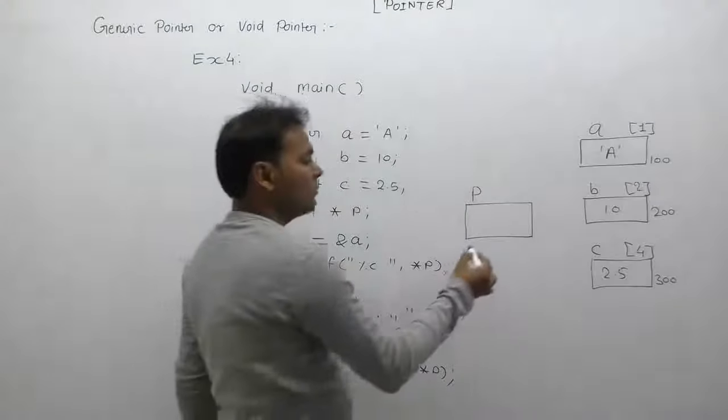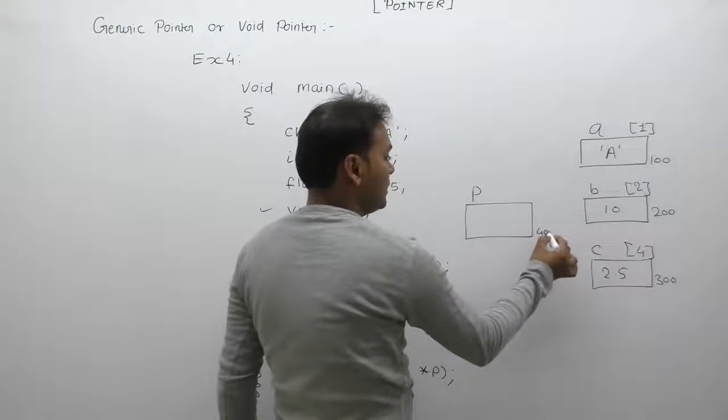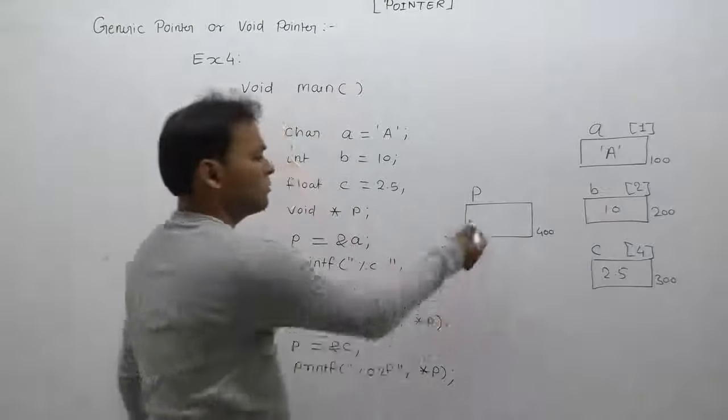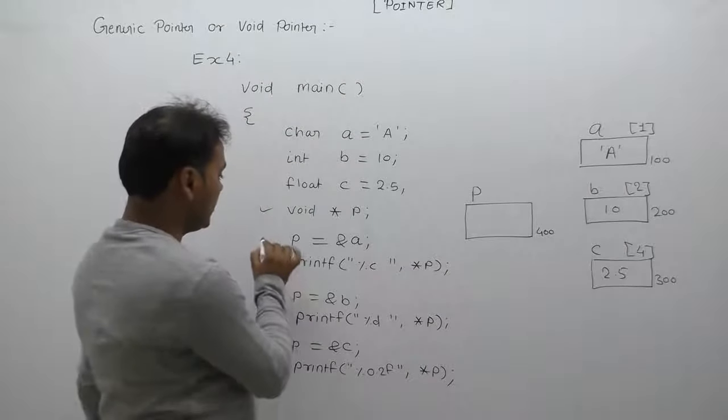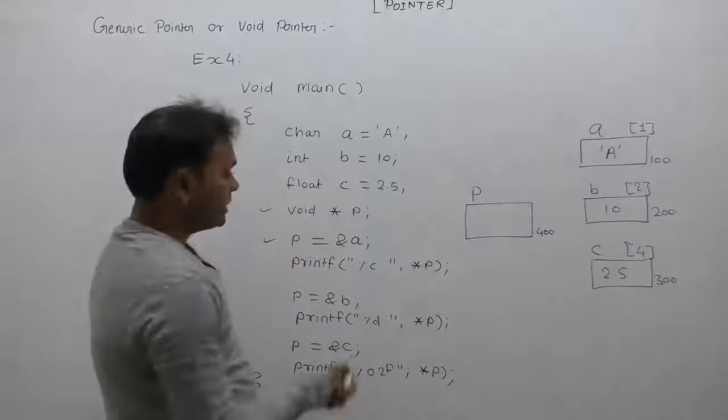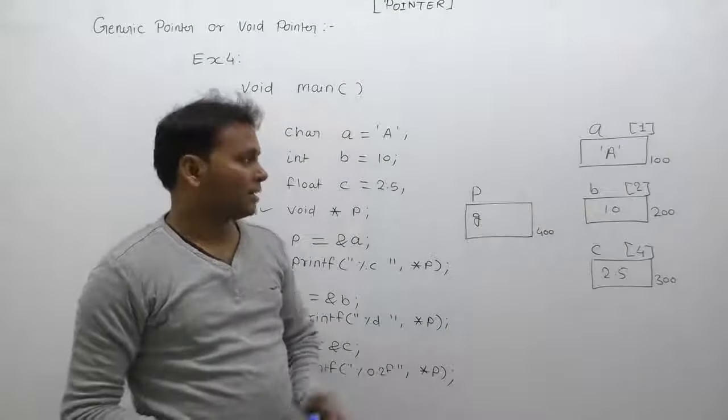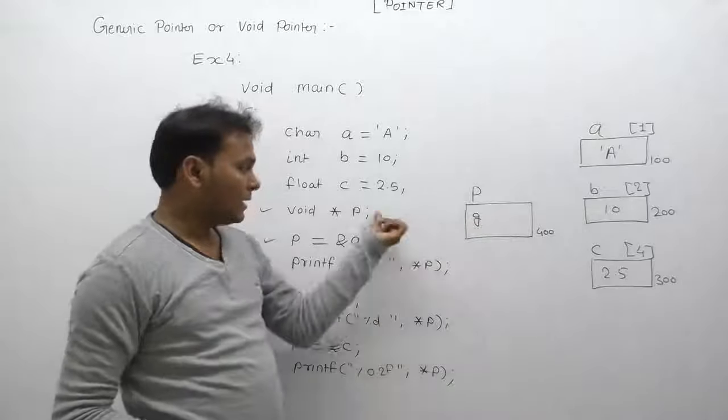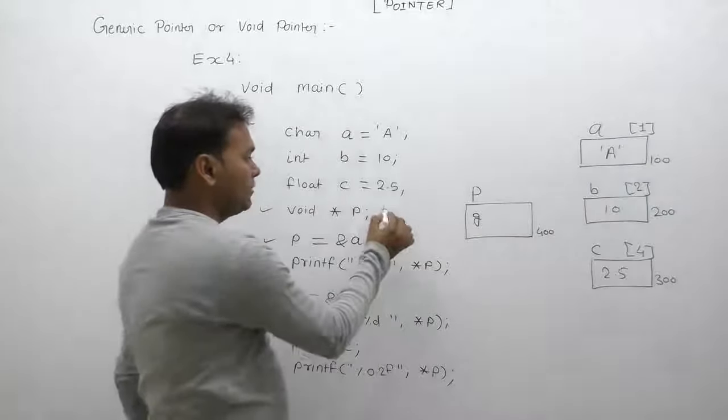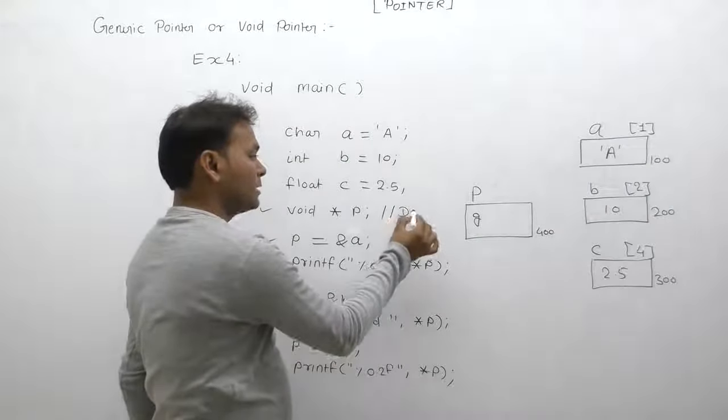Initially p has some unknown memory address. P is pointing to some unknown location. In this case p has some garbage address or unknown address. With respect to this garbage address, at that time p becomes a dangling pointer. In this case p's type is dangling pointer. We are discussing the property of dangling pointers in next lessons.